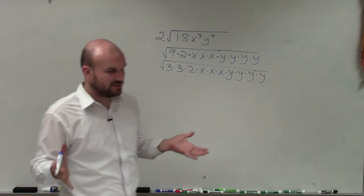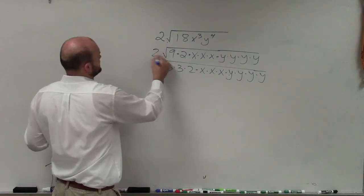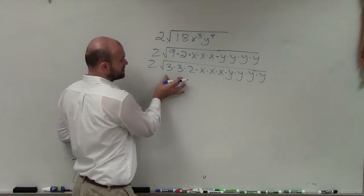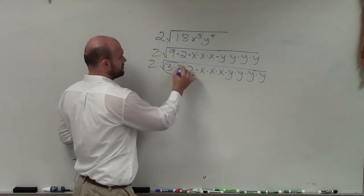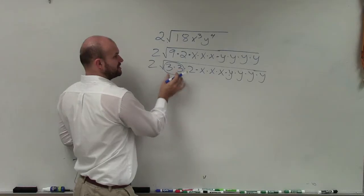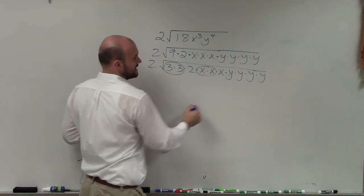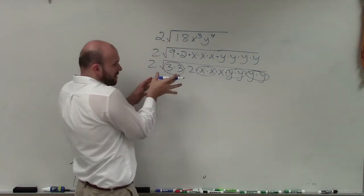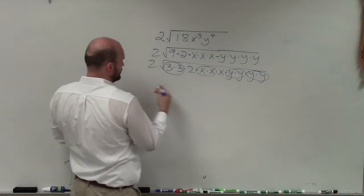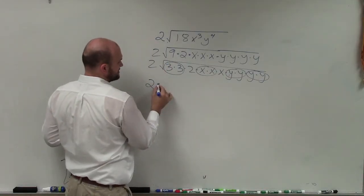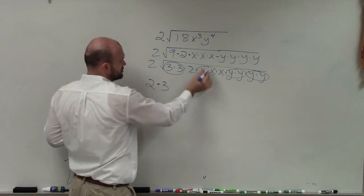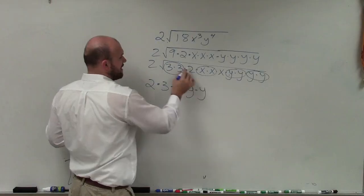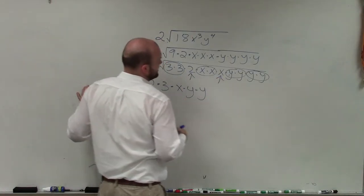Now when taking the square root, what the square root says is: what number multiplied by itself 2 times gives us our radicand? So basically what we're doing is we want to find groups of 2. The square root of 3 times 3 is just 3. The square root of x times x is just x. The square root of y times y is y. Every single pair I have, I can pull out of my square root. Left over under my radicand is 2x.